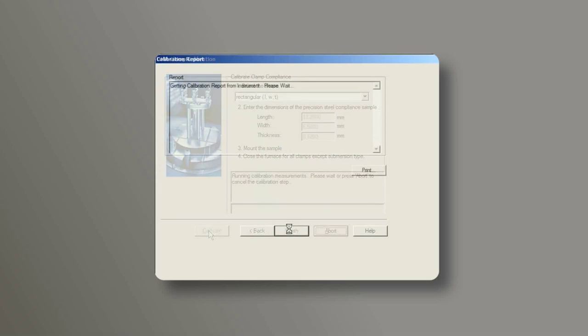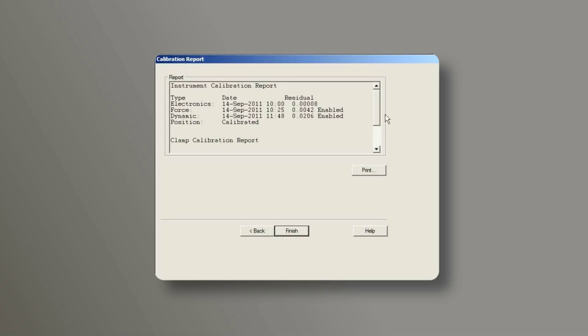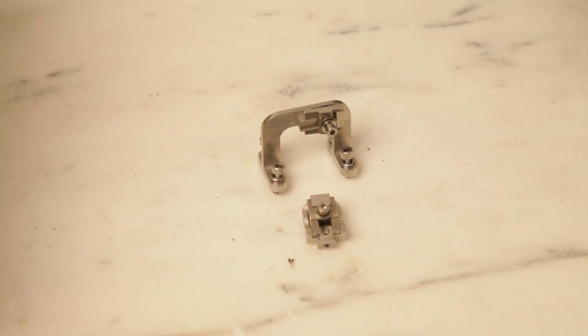After the calibration, check the report. Make sure the clamp compliance value is lower than the maximum value that is shown on the right side of the screen. You have now finished the film tension clamp calibration.